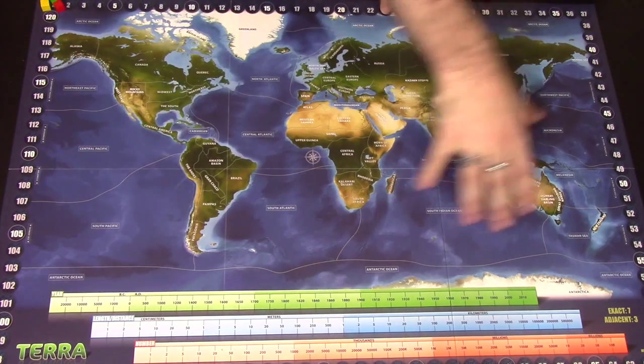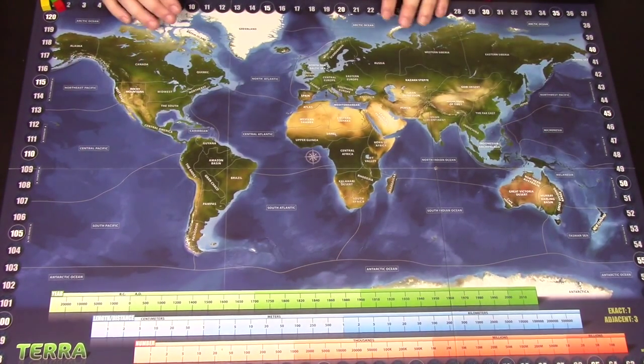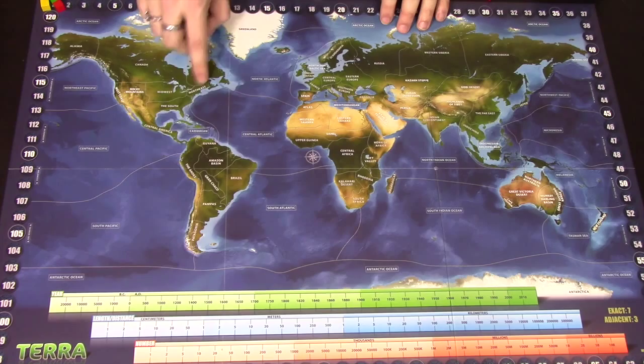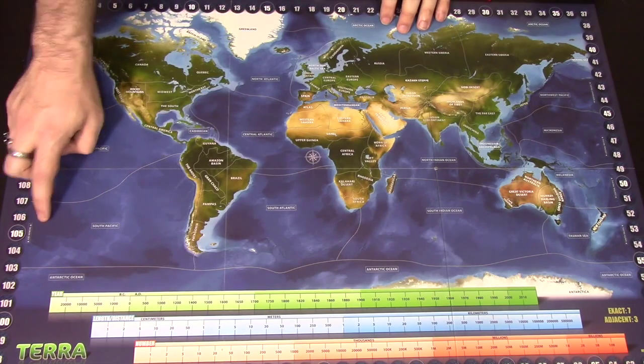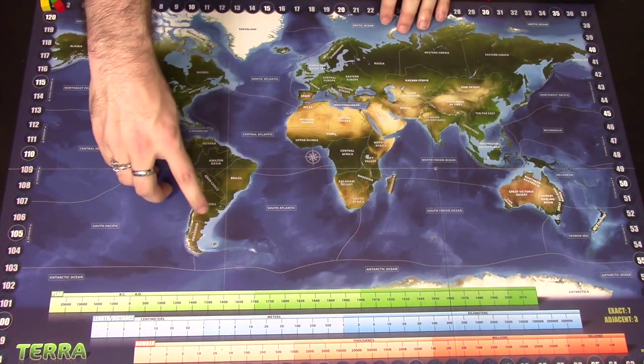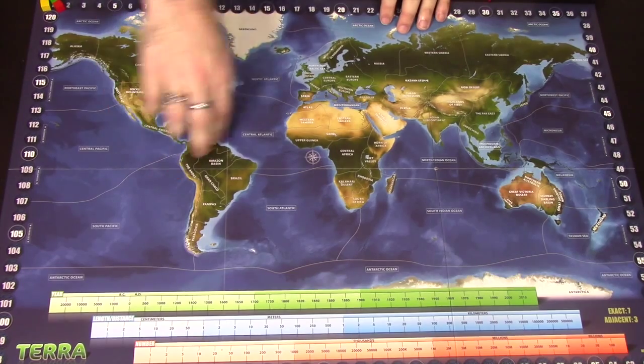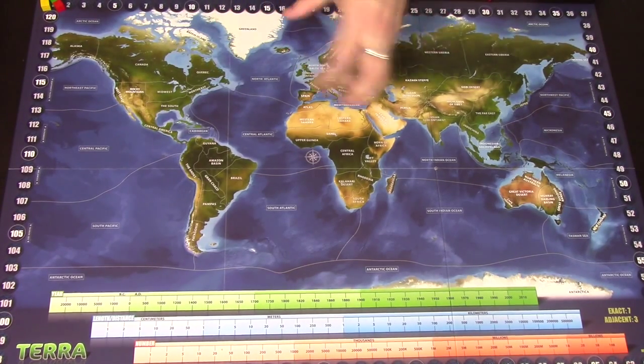You're going to have a geographical map here of the world split up into different regions. If you can see they're segregated by different lines here. You've got the South Pacific, Pampas, Brazil, Amazon Basin, Guiana, Great Britain and so on split into different regions.